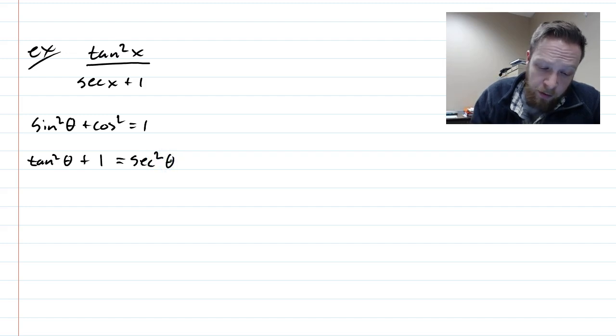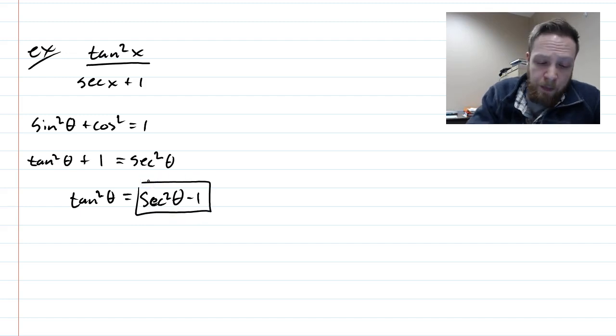Now, in my problem, I only have tan squared on top. So we could think of it like this. Tan squared theta and subtract the 1 over. So instead of tan squared, I could just write that on top. So going back to the problem, let's write that out.